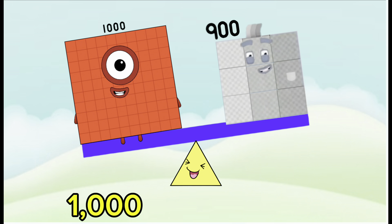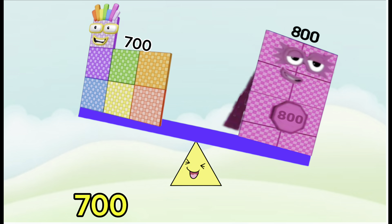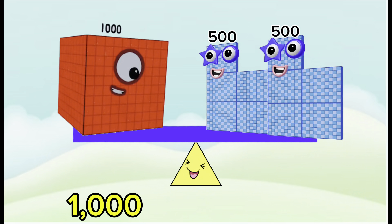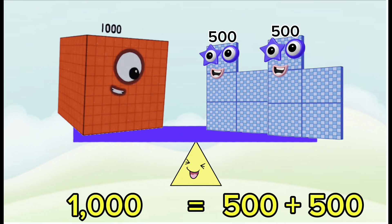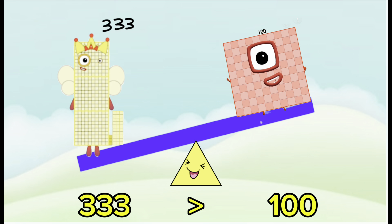One thousand is greater than nine hundred. Seven hundred is less than eight hundred. One thousand is equals to five hundred plus five hundred. Three hundred thirty-three is greater than one hundred.